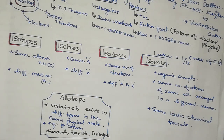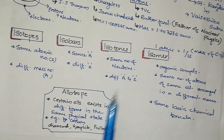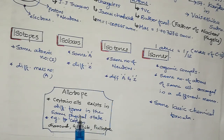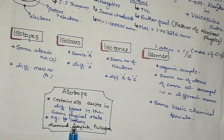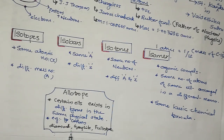Allotropes: certain elements exist in different forms in the same physical state. For example, carbon. The allotropes of carbon are diamond, graphite, and fullerene.